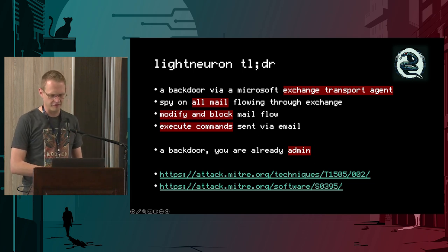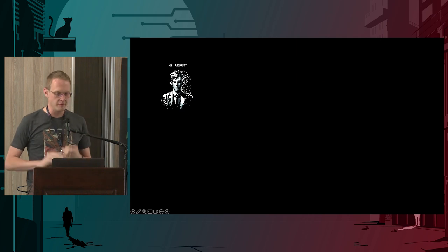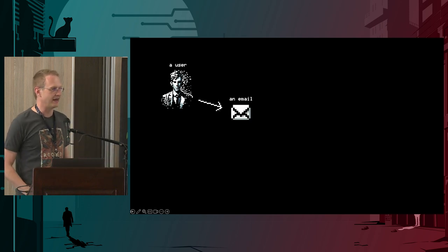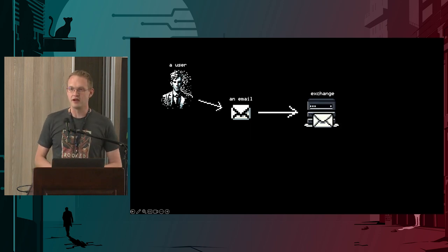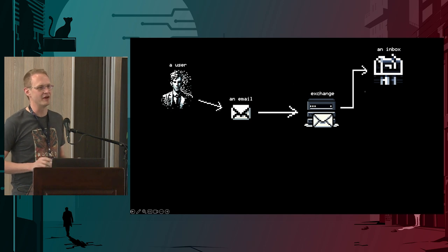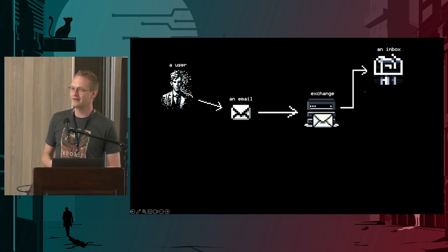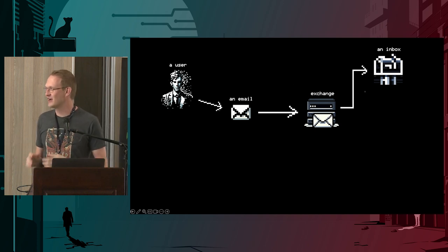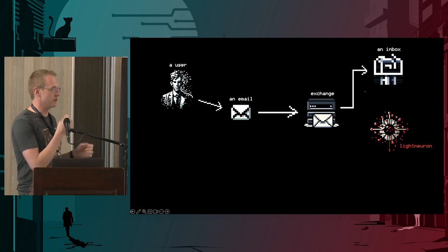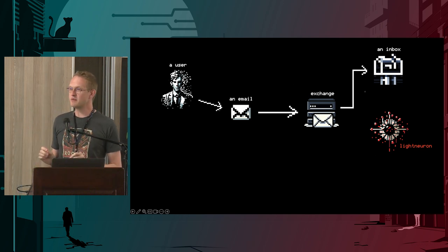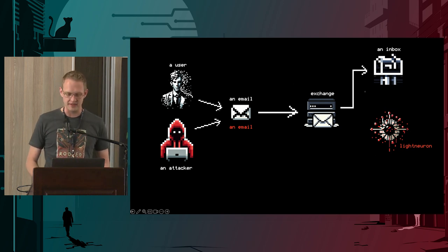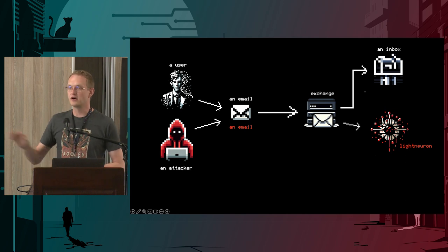To understand how this backdoor works, you start with a user sending an email. That email flows through an Exchange server and gets delivered to a mailbox — a little bit of email 101. If your Exchange server has been infected with Light Neuron, the picture changes slightly. Instead of mail potentially going directly to the mailbox, it now goes through this transport agent, which we'll unpack. Either the mail gets delivered directly into the mailbox, or there's some post-processing that would occur because of a special email the attacker sent.